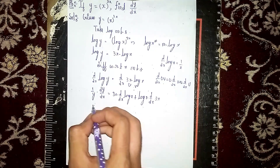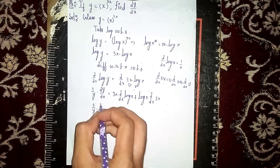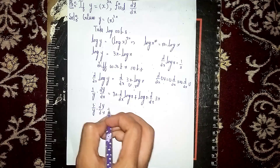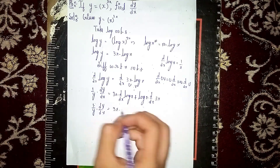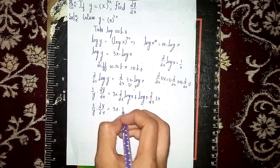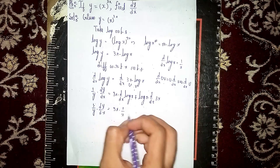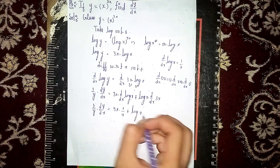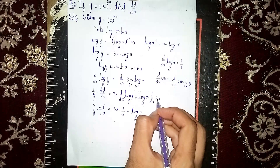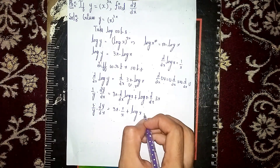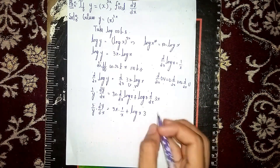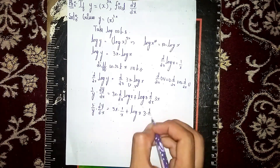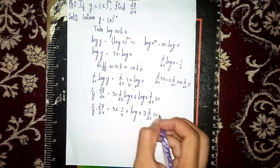So (1/y) dy/dx equals 3x into 1/x, plus log x into d/dx of 3x. Now here 3 comes outside, so it becomes 3 into d/dx of x.